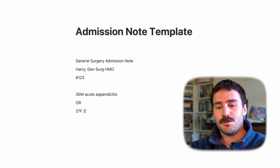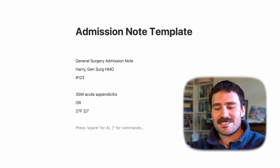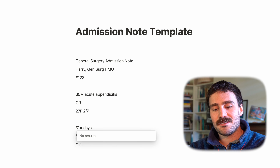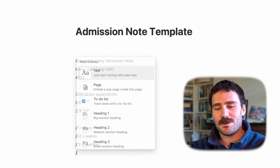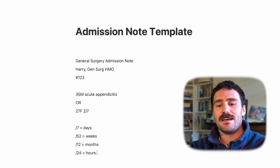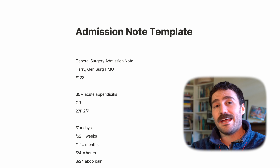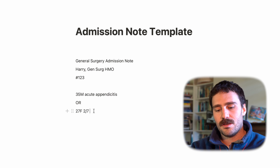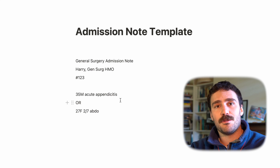There are some common medical abbreviations used in these summaries. Slash-seven means days, slash-52 means weeks, slash-12 means months, and slash-24 means hours. So '8/24' means eight hours. Another example of a first-line summary might be: 'A 27-year-old female presents with two days of abdominal pain, under investigation.'